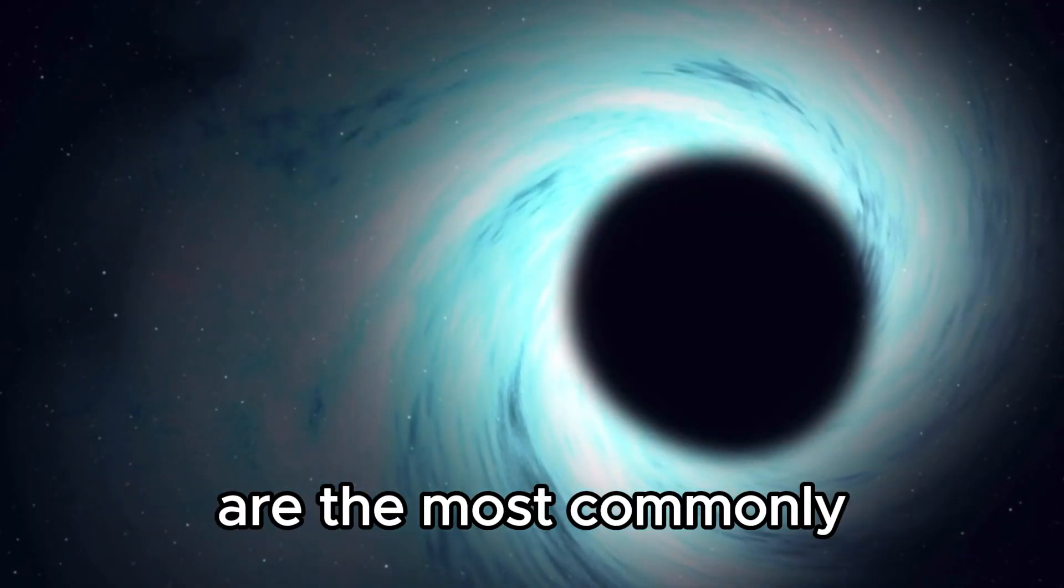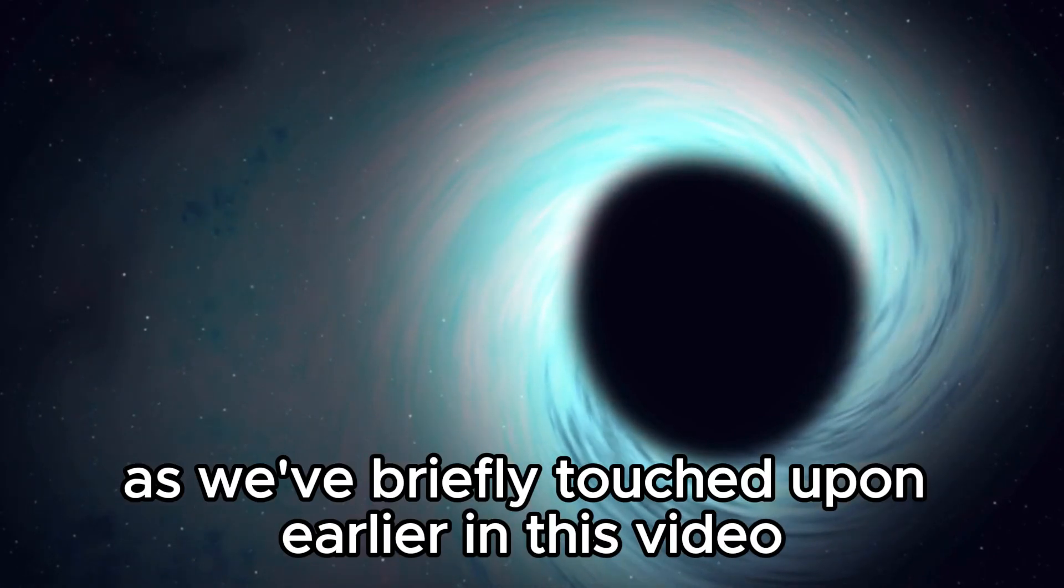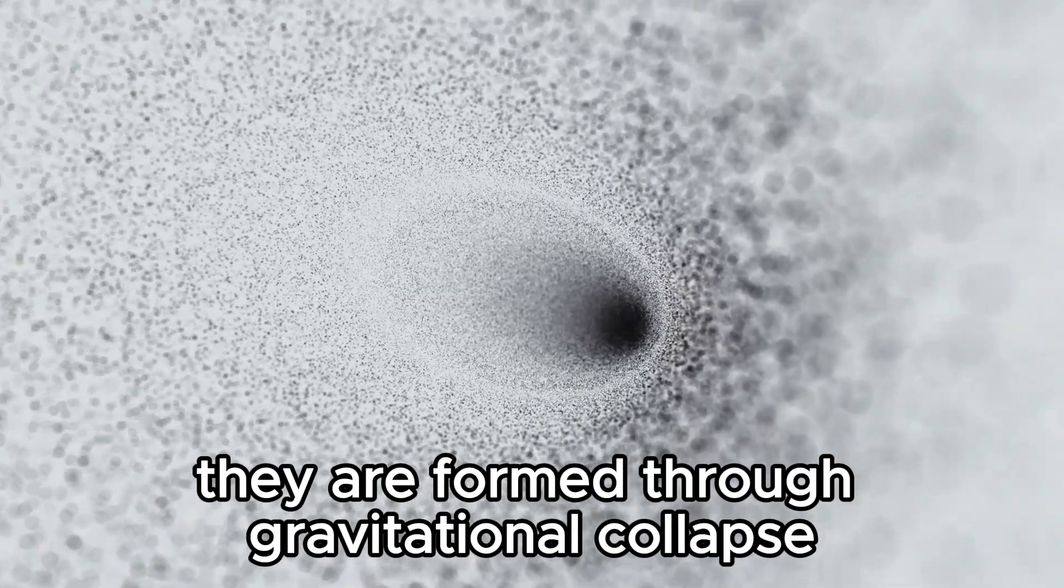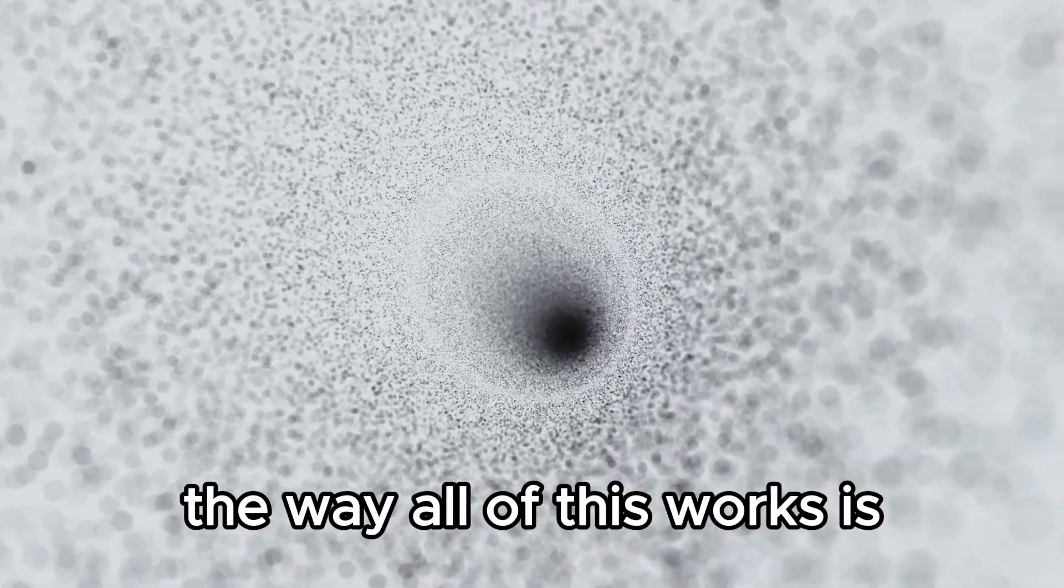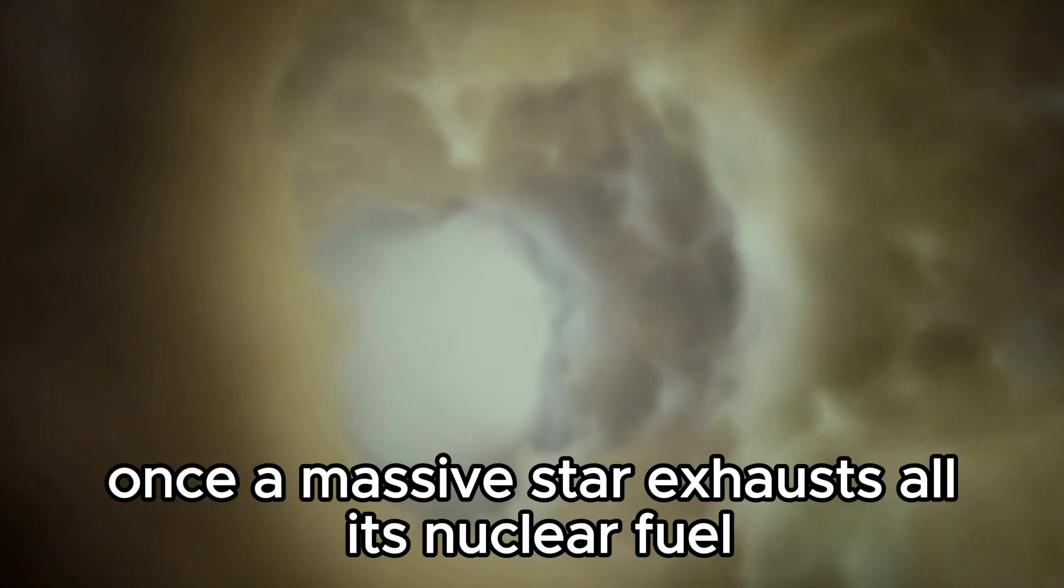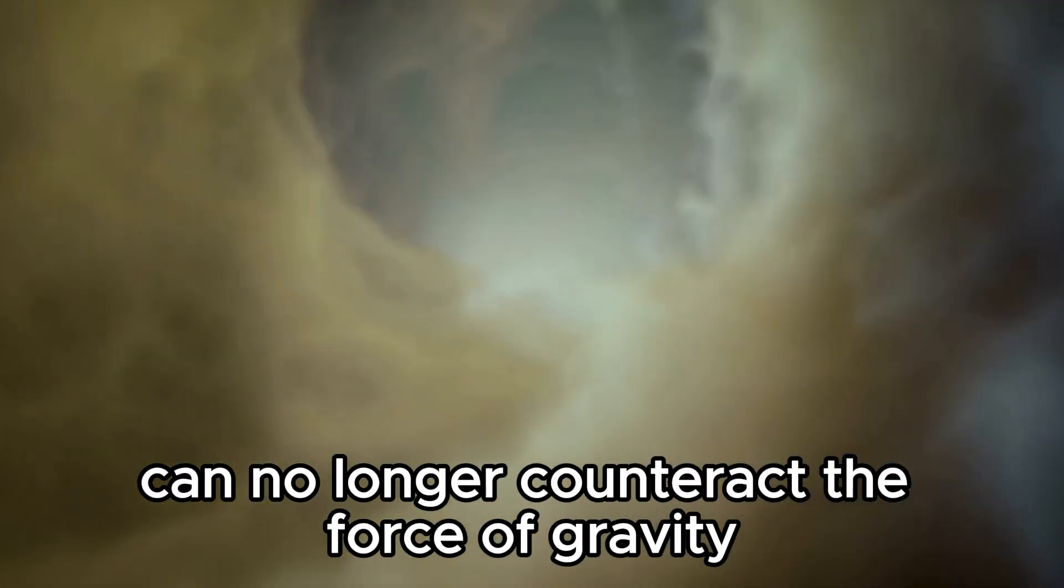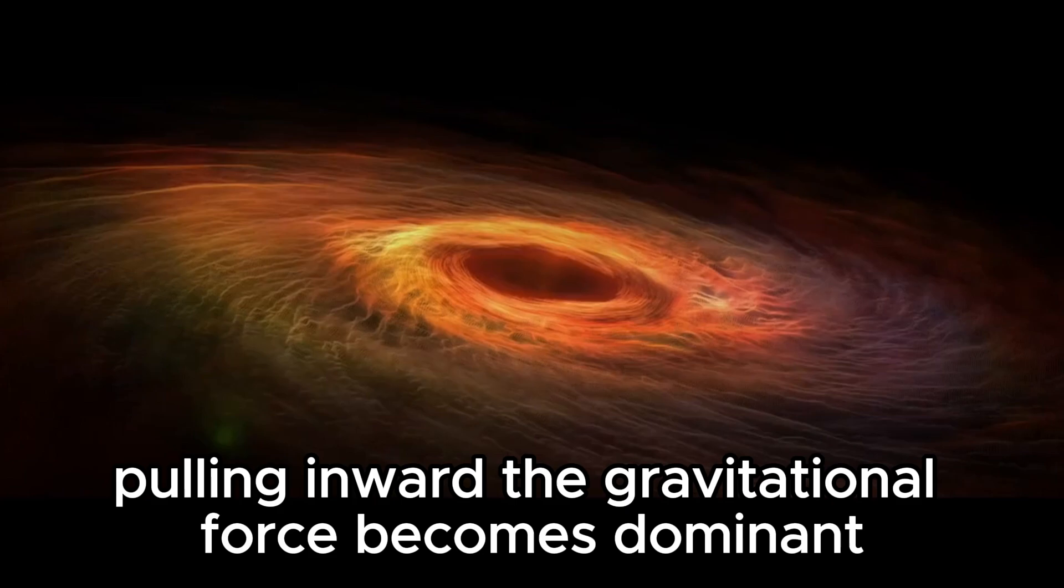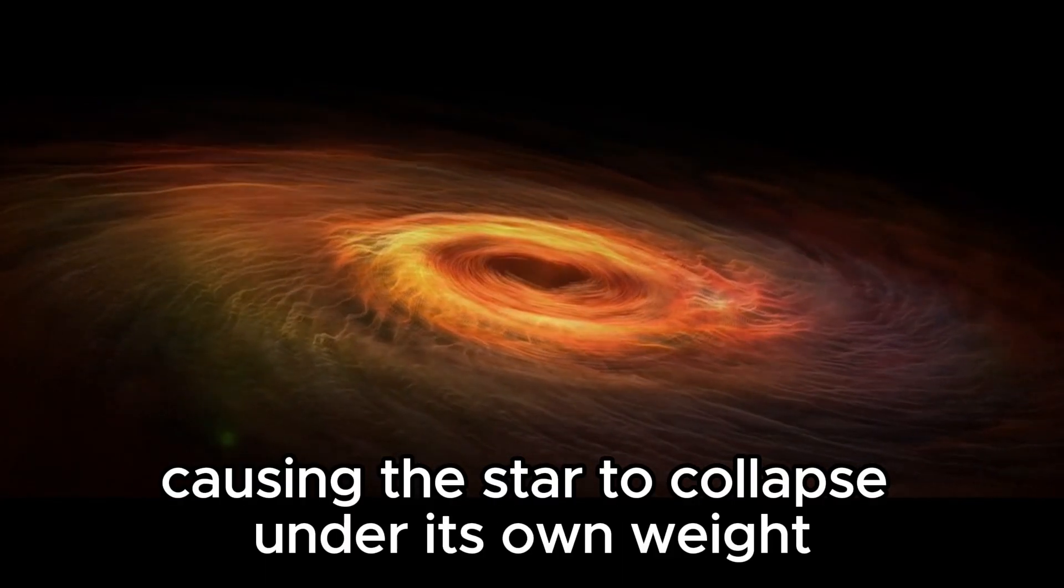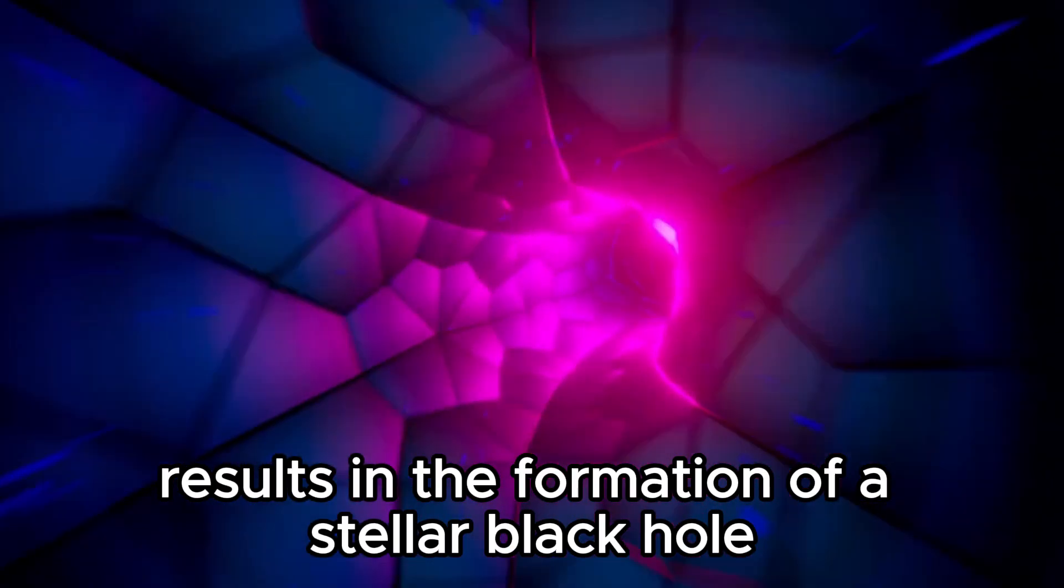Stellar black holes are the most commonly observed type of black hole in the universe. As we've briefly touched upon earlier in this video, they are formed through gravitational collapse at the end of a massive star's life. The way all of this works is, once a massive star exhausts all its nuclear fuel, the outward pressure generated by nuclear reactions can no longer counteract the force of gravity pulling inward. The gravitational force becomes dominant, causing the star to collapse under its own weight. This collapse results in the formation of a stellar black hole.